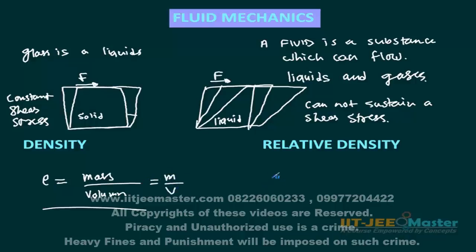Relative density is used many times and we should understand what it is. The value of 1 liter of water is 1 kg at 4 degrees centigrade. In comparison to this, the relative density of any substance is defined as the density of that substance divided by the density of water at 4 degrees centigrade.